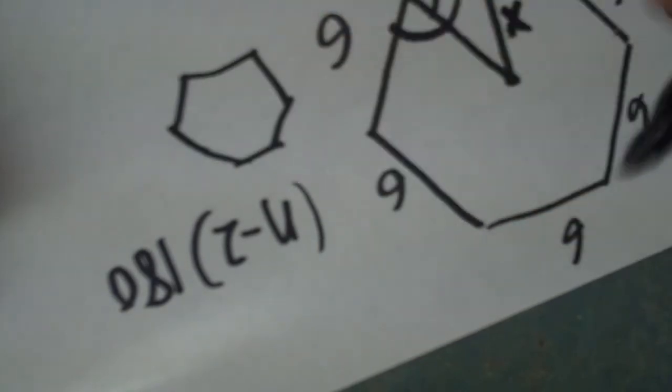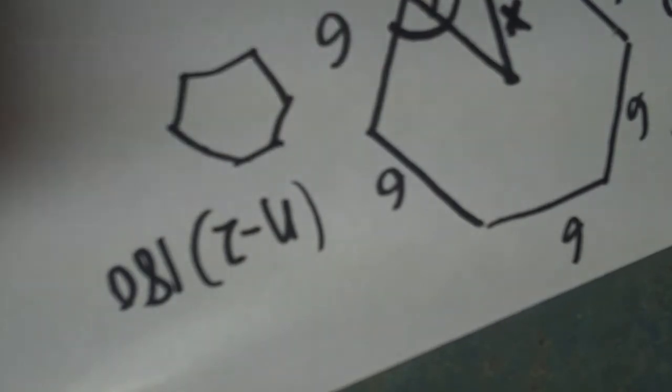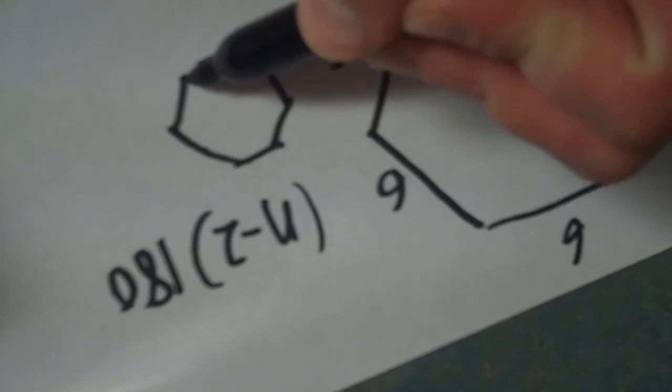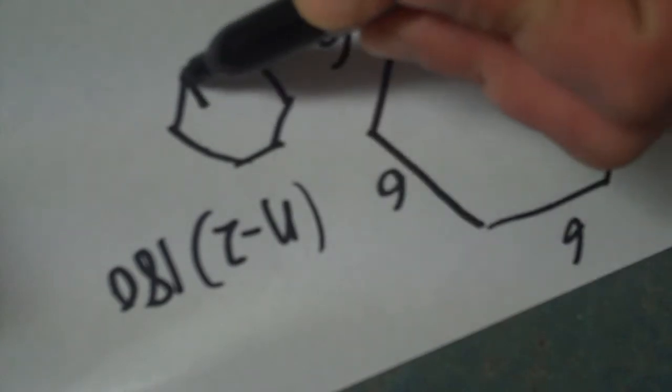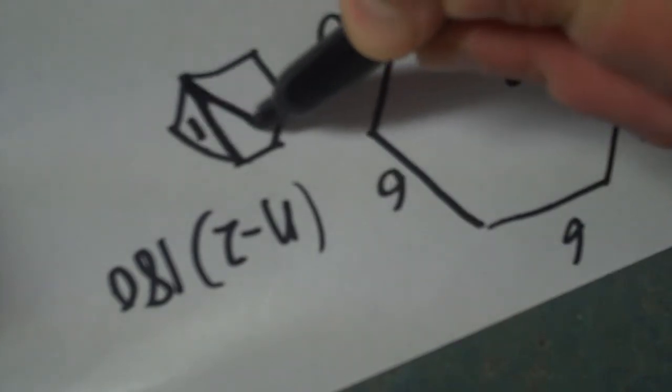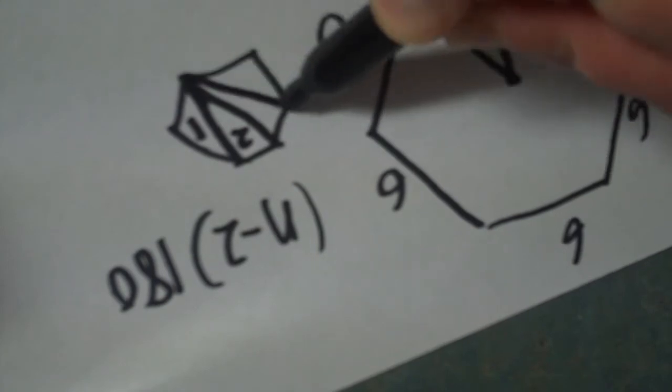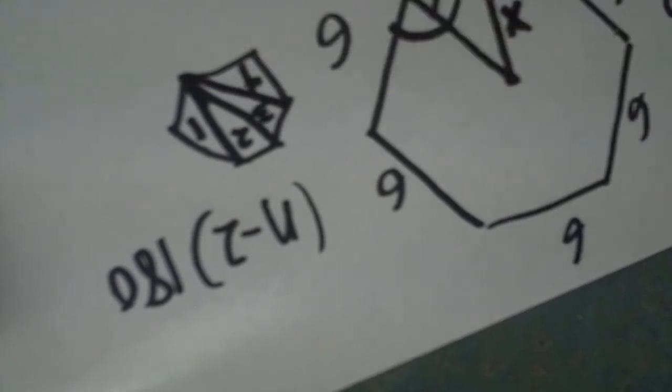So I've got my hexagon right. I need to know how much all the angles are added together. I know that a triangle has 180 degrees inside, so what if I just broke that hexagon into little triangles that go from one point all the way across, so you have to have little diagonals. One, two, three.